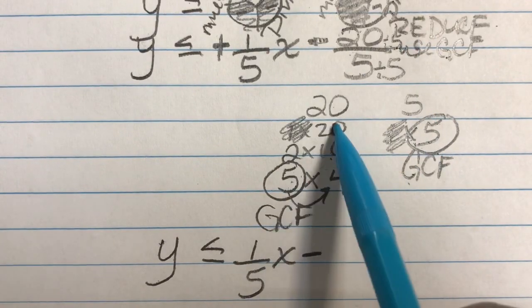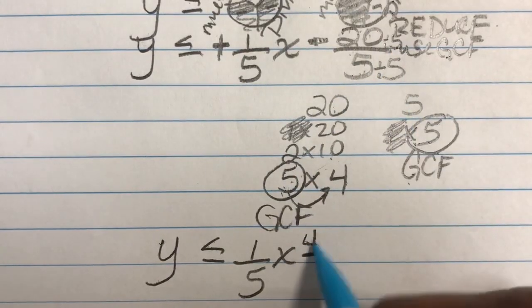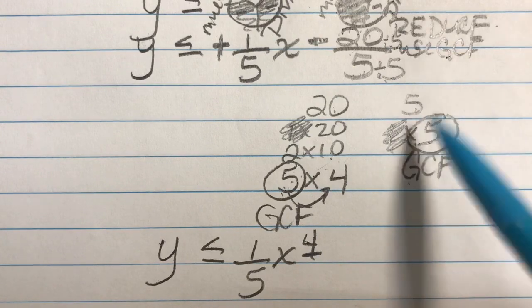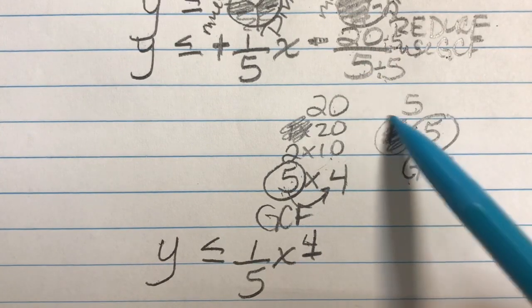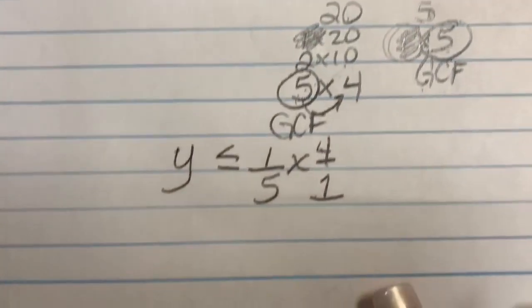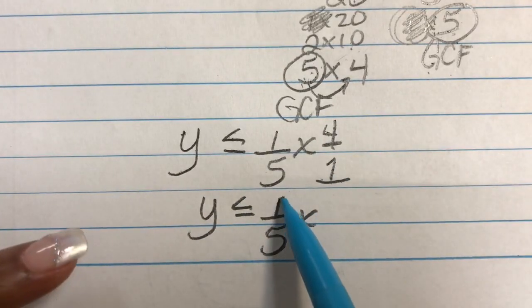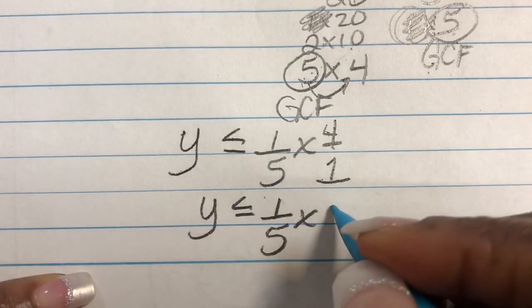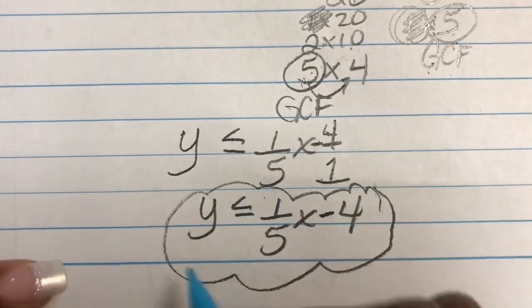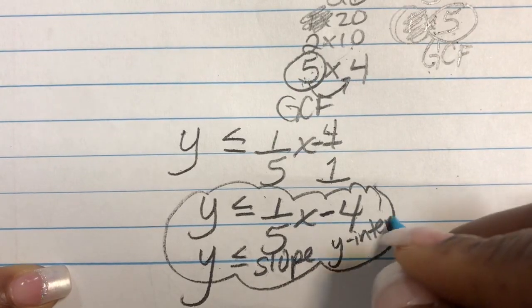Here, I see 5 times 4 equals 20. So I see the number 20, I see the number 5, so 20 divided by 5 must be 4. Here, 5 divided by 5, I see 1 times 5 is 5. So I see a 5 here, I see a 5 here. So 5 divided by 5 is 1. I don't have to put this 1 at the bottom of a fraction because it's just understood. So Y is less than or equal to 1 over 5X. But if there's a number 1 at the top, you have to put that there. And that's a minus sign, I forgot. Minus 4, so this is our slope and Y-intercept form.